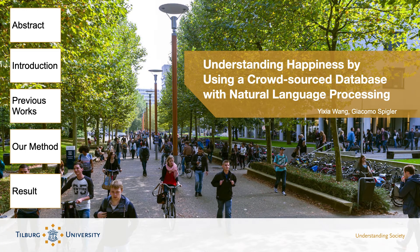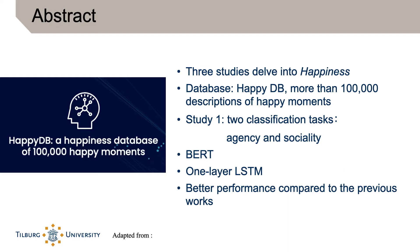The title of the thesis presented here is 'Understanding Happiness by Using a Crowdsourced Database with Natural Language Processing.' We are going to talk about five sections of the thesis. There are three studies that delve into a database to know more about happiness. This crowdsourced database is called HappyDB, which consists of more than 100,000 descriptions of happy moments collected using Amazon's Mechanical Turk. Today we focus on the first study, where we conduct two classification tasks to learn two critical concepts of happiness: agency and sociality.